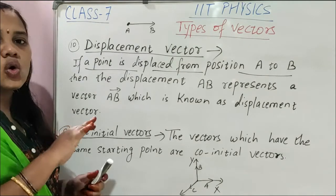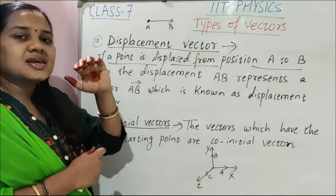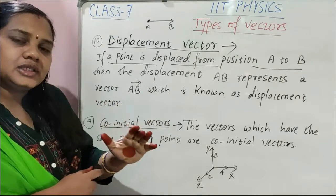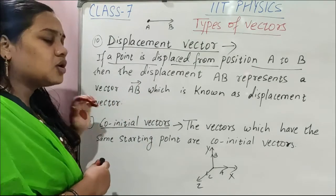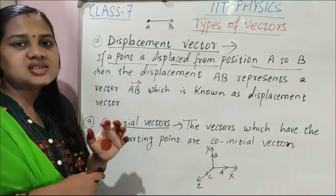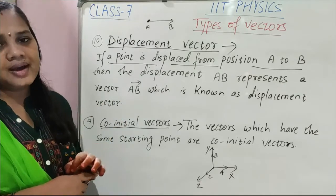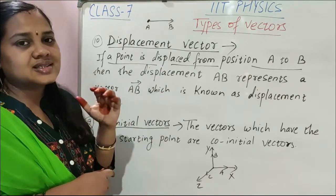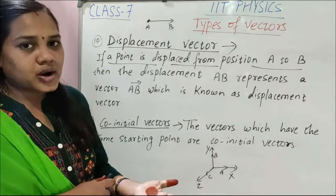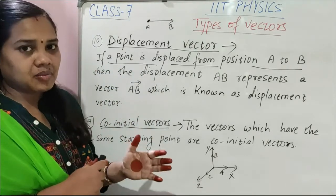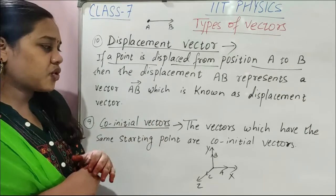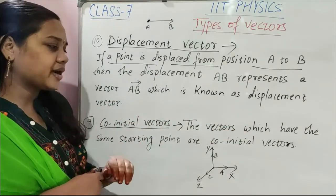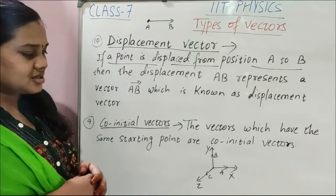Next is co-initial vector — very simple. Co means same initial point. So two or more vectors having the same initial point are known as co-initial vectors. They start from the same point. The vectors which have the same starting point are co-initial vectors.